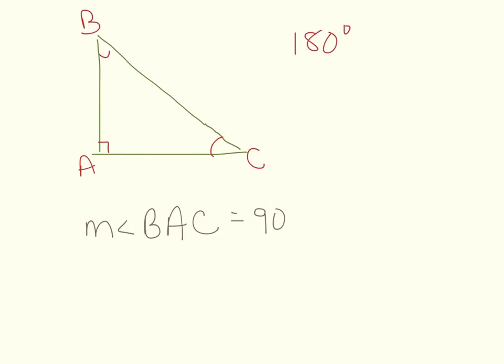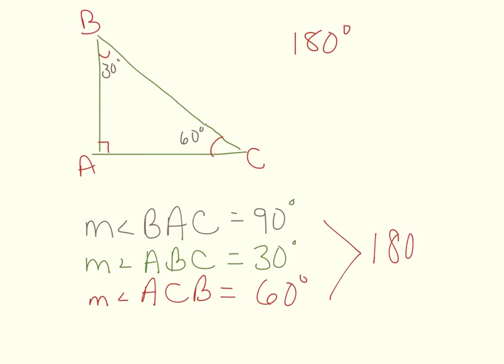Now, suppose that I knew that this was 30 degrees, and that was 60 degrees. I could write the measure of angle ABC is 30 degrees. And then the measure of angle ACB is 60 degrees. Now, when I add these all up together, that equals 180 degrees.